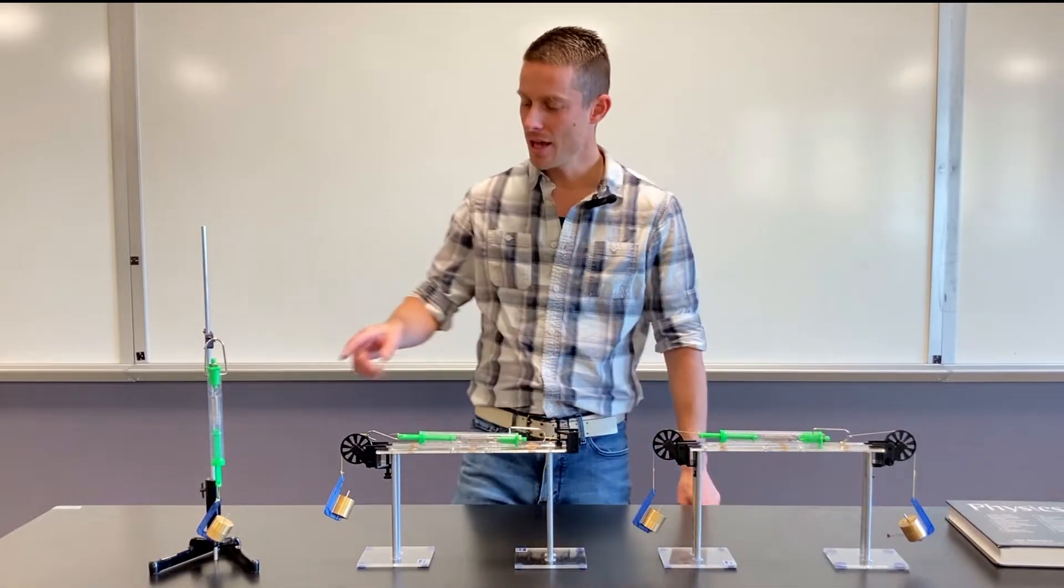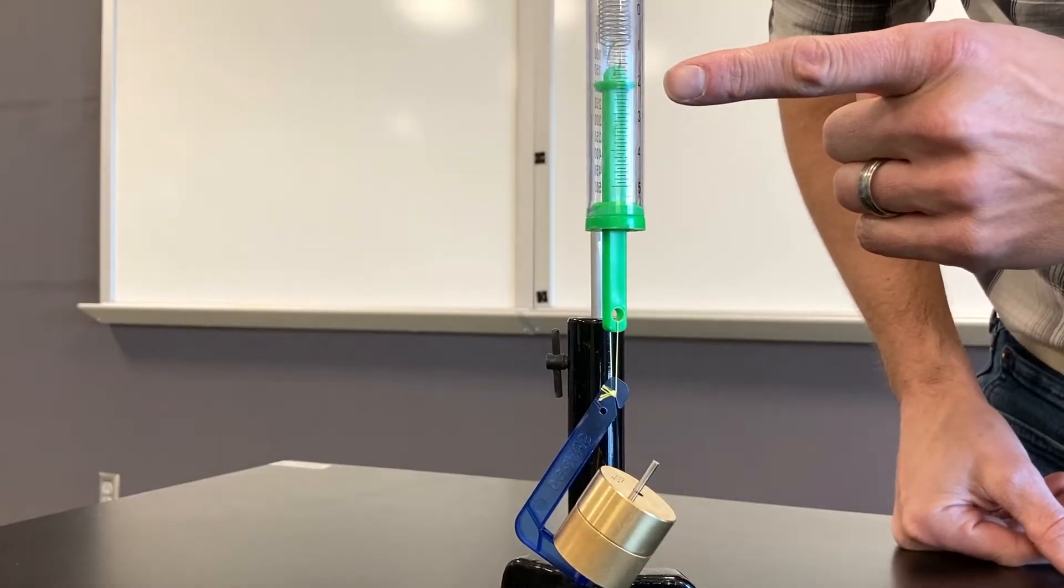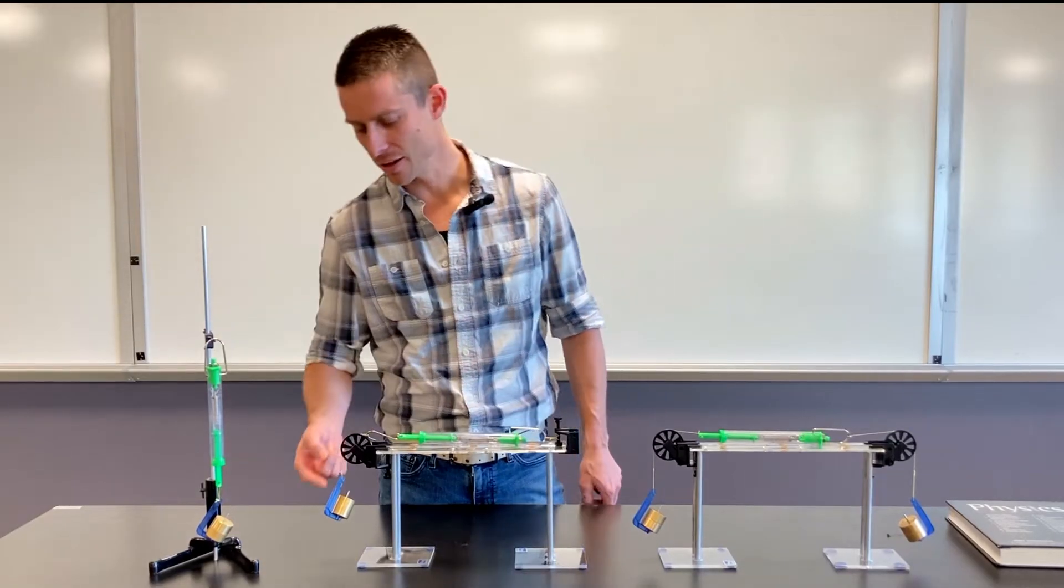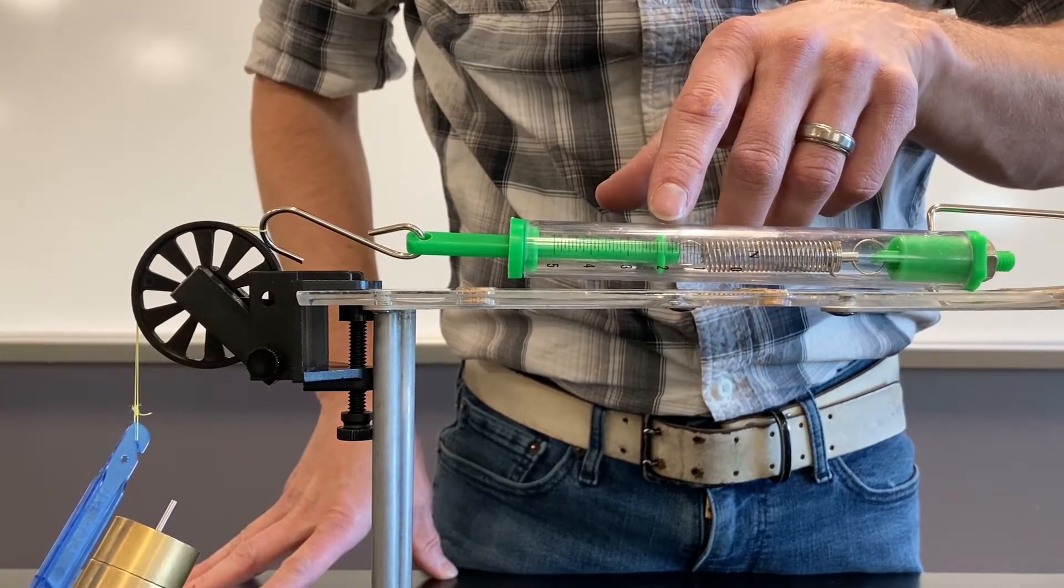To simplify things, if I've got two newtons hanging right here from a spring scale, the spring scale is going to read two newtons. If this spring scale is holding up two newtons right here, this one's also going to read two newtons.